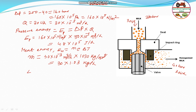Substituting into the heat energy equation: E_H equals 30 into 1.03 kg per hour, multiplied by 3.8 kJ per kg per Kelvin, which is 3.8 into 10 to the power 3 joules per kg per Kelvin, multiplied by delta T — the change in temperature to be found.